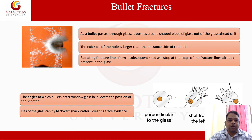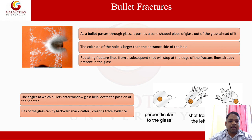Bullet fractures. As the bullet passes through glass, it pushes a cone-shaped piece of glass out ahead of it. The exit side of the hole is larger than the entrance side of the hole. The radiating fracture lines from a subsequent shot will stop at the edge of the fracture lines already present in the glass. The angle at which a bullet enters window glass helps locate the position of the shooter. Bits of glass can fly backward and scatter, creating trace evidence, which is very important for forensic examination.